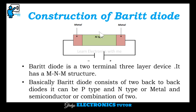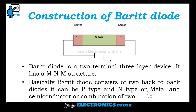This is the construction of BARITT Diode. It has two terminals: anode and cathode. It has three layers and an MNM structure — that is, metal, N-type, and metal structure. Basically, BARITT Diode consists of two back-to-back diodes. It can be P-type and N-type, or metal and semiconductor, or a combination of the two.